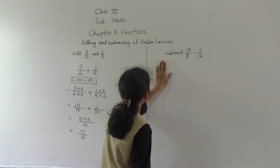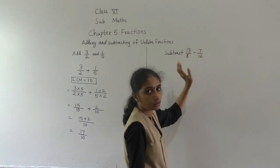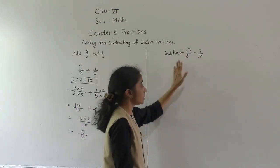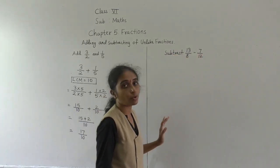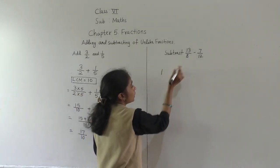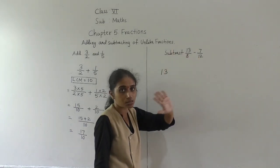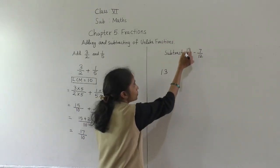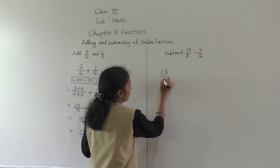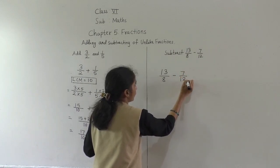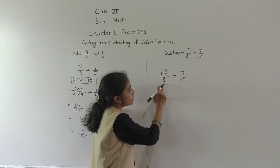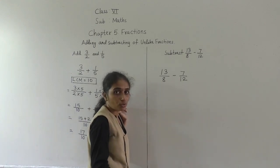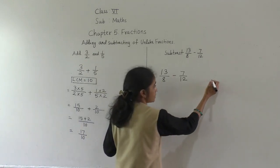Now let's solve another example: subtract 13 upon 8 minus 7 upon 12. Here it simply says subtract — no 'from' — so we write it directly as 13 upon 8 minus 7 upon 12. If you observe these fractions, the denominators are different, so these are unlike fractions. We need to make the denominators the same by finding the LCM of 8 and 12.